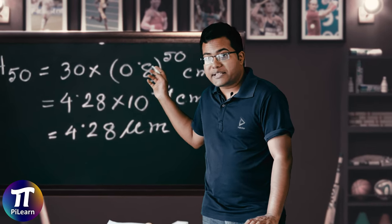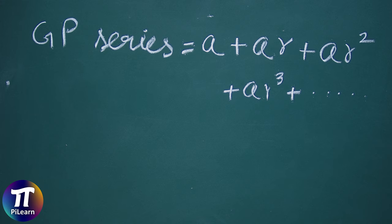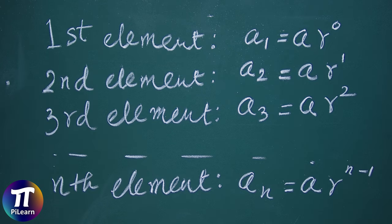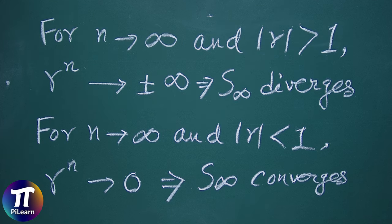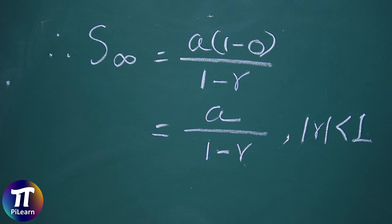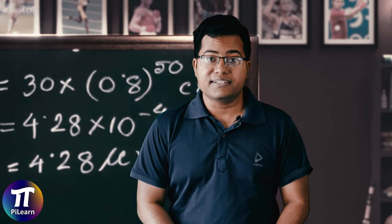You see how a simple mathematical model made the problem of bouncing balls easy. That's the beauty of mathematics. To summarize: a GP series is a + ar + ar squared + other terms. The nth term of a GP series is a·r^(n−1). The sum of n terms is S = a(1 − r^n) / (1 − r). At infinity, the series converges only for |r| < 1, and in that case S_infinity = a / (1 − r). And table tennis balls keep bouncing up to the 5 micron range. In the upcoming videos we'll discuss geometric progression and bounces in more detail. Math is fun!